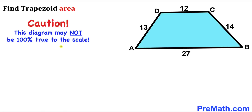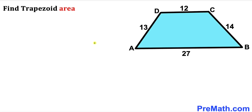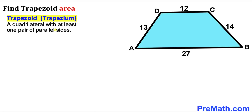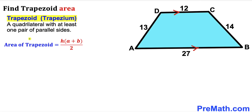Please keep in mind that this figure may not be 100% true to scale. Let's get started and recall the definition of a trapezoid — sometimes called a trapezium — a quadrilateral with at least one pair of parallel sides. As you can see in this diagram, side AB is parallel to side CD.